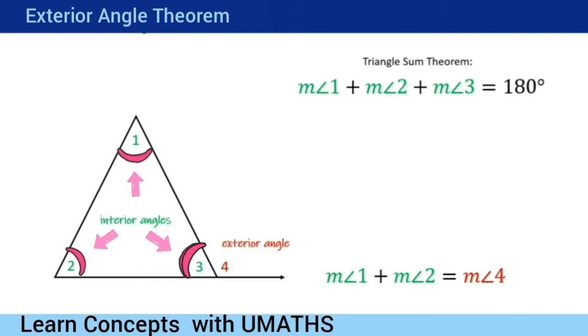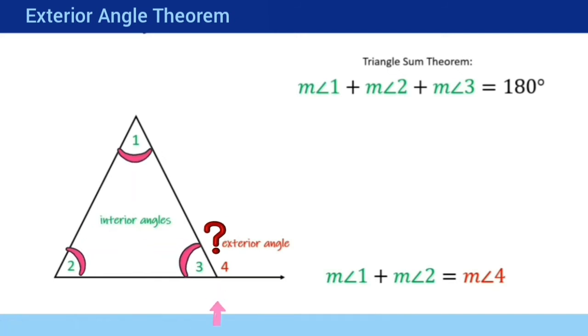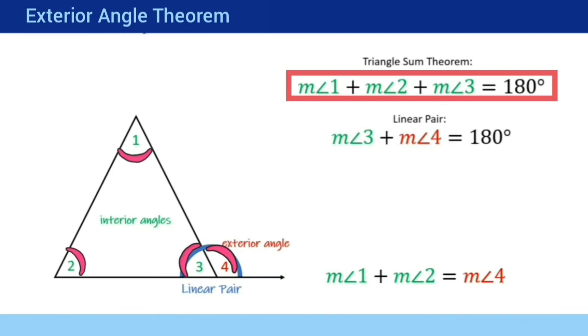Now can you guess the sum of angle 3 and this exterior angle? If you observe them carefully, they are linear pairs. And we know that linear pairs are supplementary, so we can write angle 3 plus angle 4 equals 180 degrees.